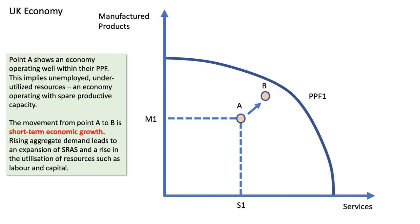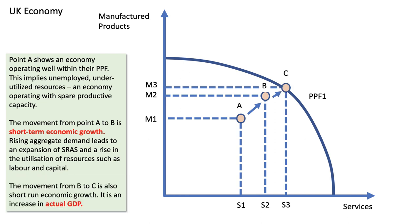Production goes up and therefore there is an increase in the utilisation of resources such as labour and capital. A movement from B to C is also short-run economic growth, an increase in actual GDP. So movements from within the PPF towards the frontier is essentially short-run economic growth.